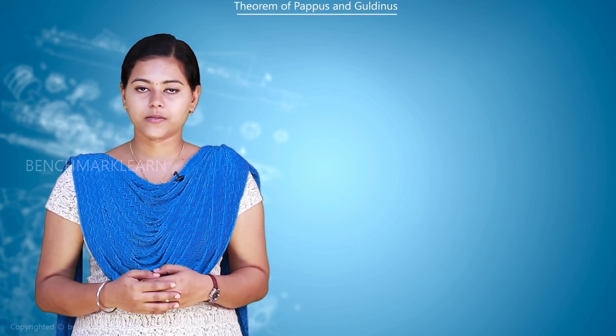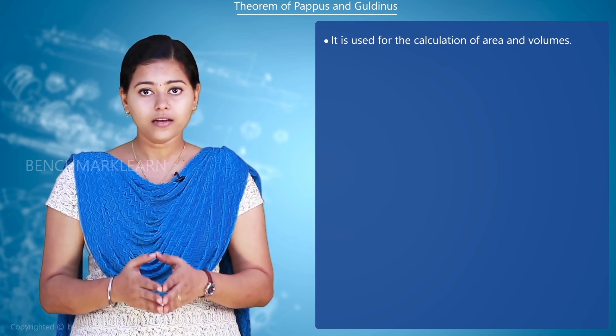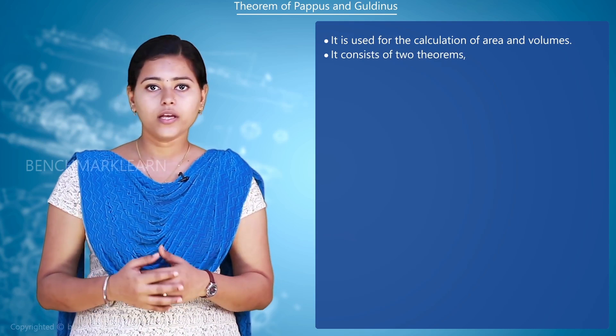Theorem of Pappus and Guldinus. It is used for the calculation of area and volumes. It consists of two theorems.